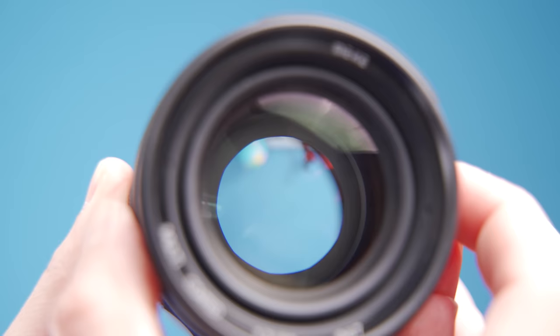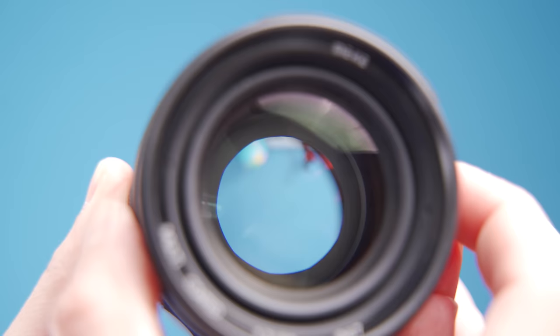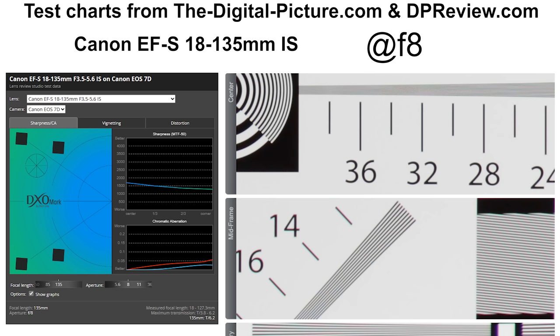Cameras go through a similar experience with what they call the diffraction limited aperture. A camera lens has an aperture opening inside it, and you'll often see that when you take a lens down to its smallest aperture the sharpness of the image can drop quite noticeably.